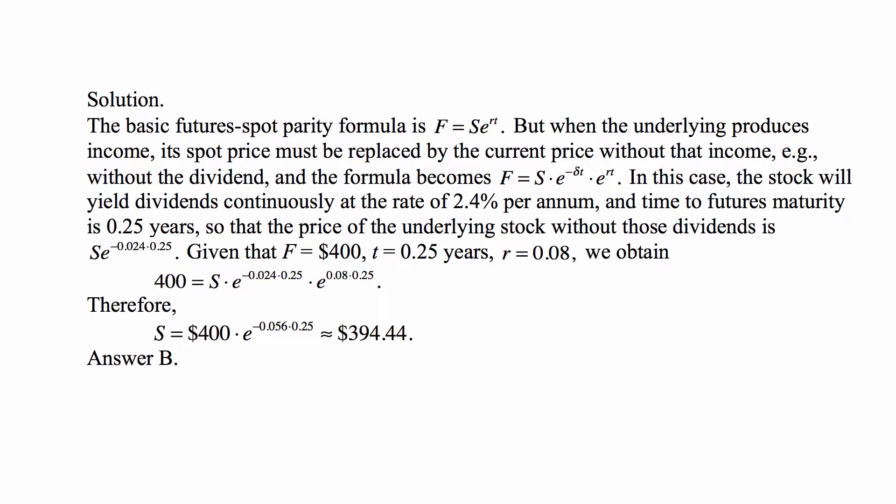The basic futures-spot parity formula is that the futures price equals the spot price times e to the RT, which is the accumulated value of the spot price. But when the underlying produces income, its spot price must be replaced by the current price without that income — without the dividend — and the formula becomes F equals S times e to the minus delta T times e to the RT, where delta is the dividend yield.